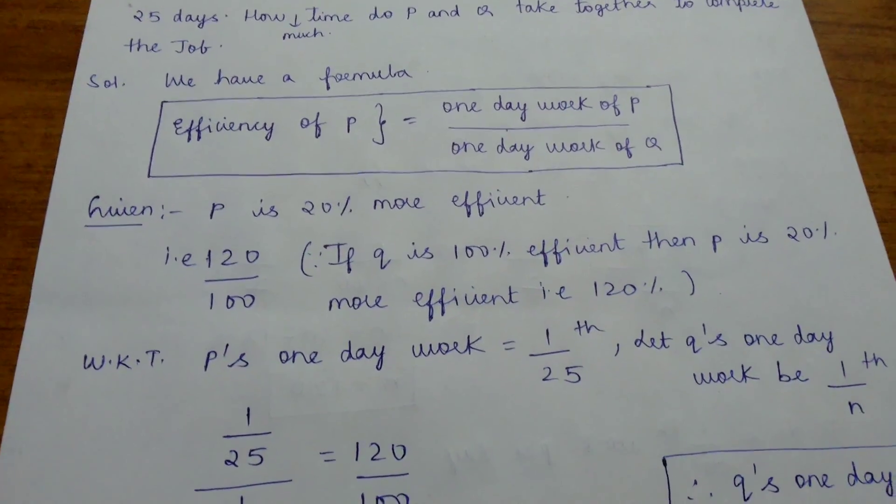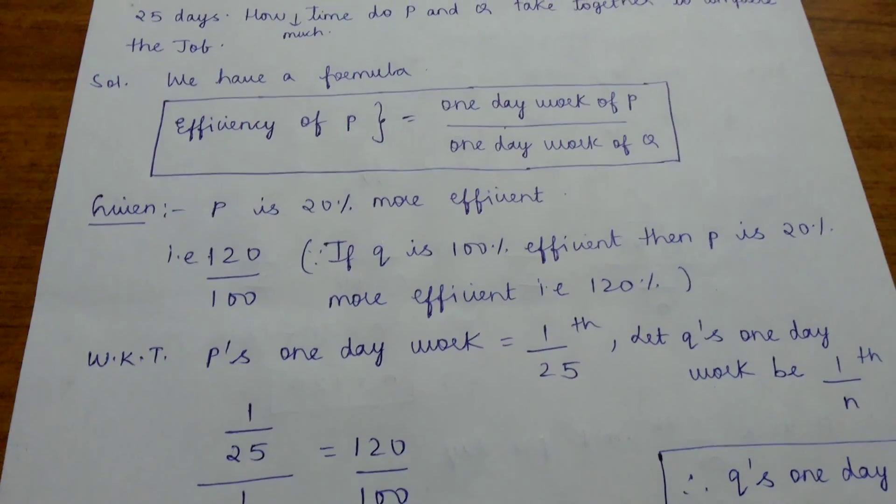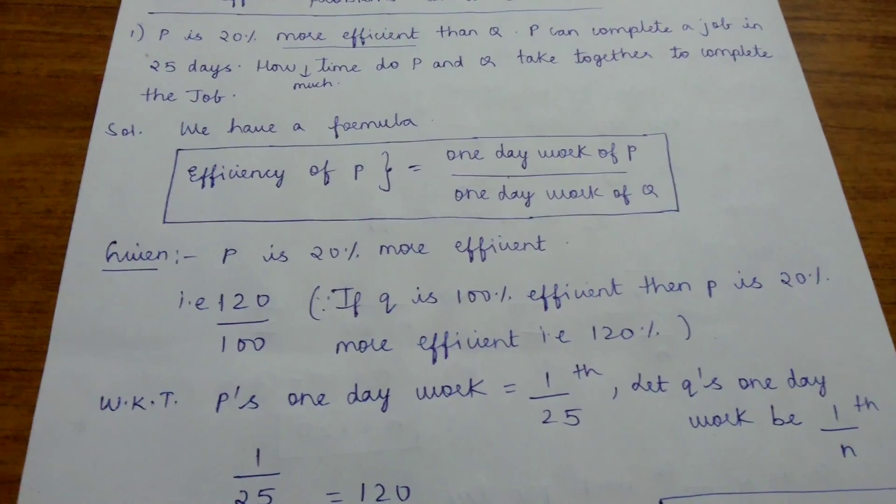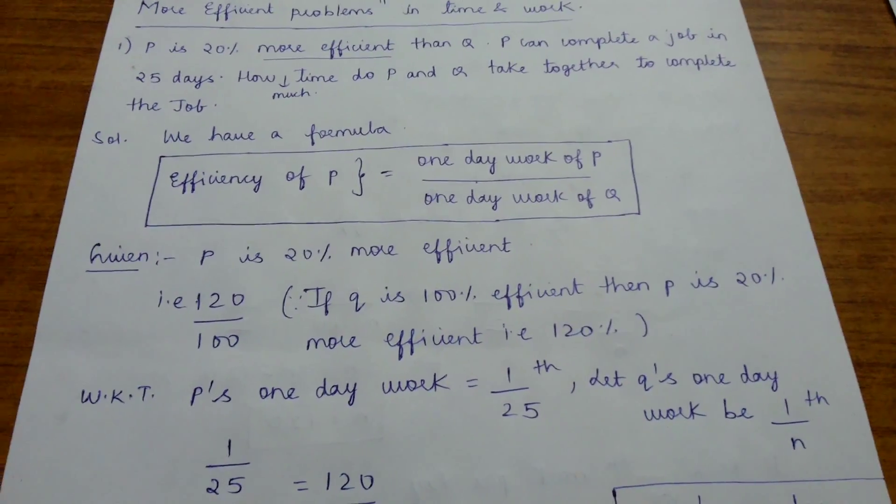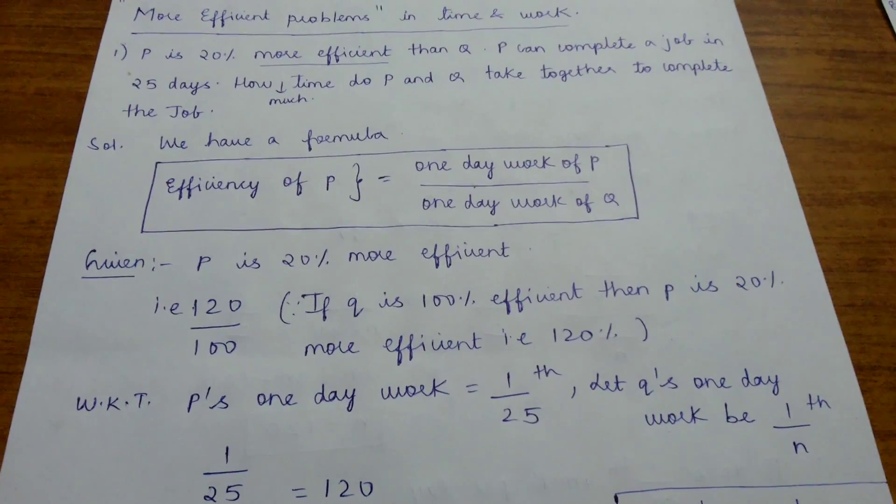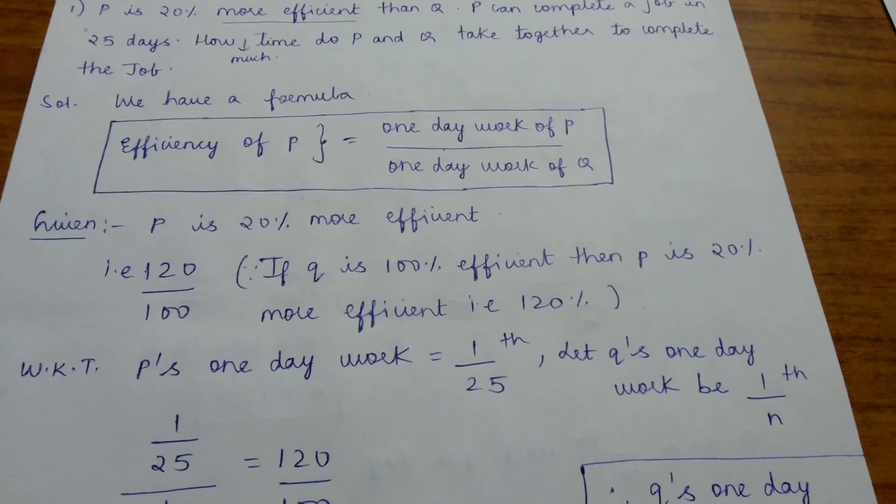Now we calculate the one day work of P and Q. P completes the work in 25 days, so its one day work becomes 1 by 25. He has not given how many days Q takes to complete the work, so let us take it as N.